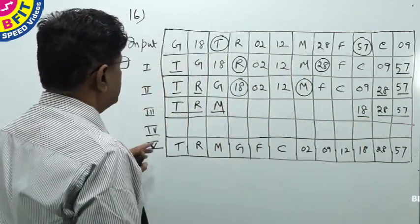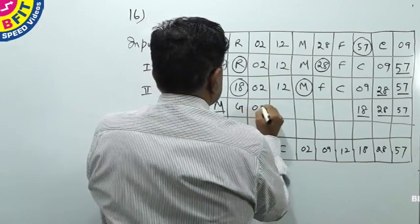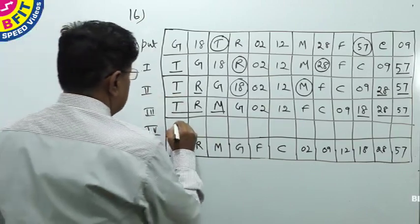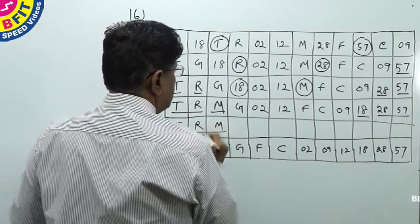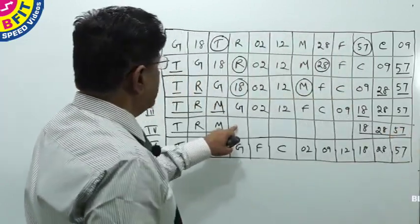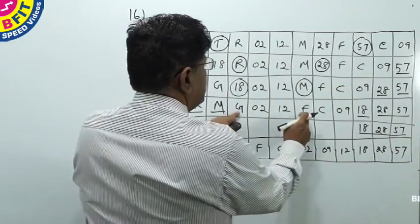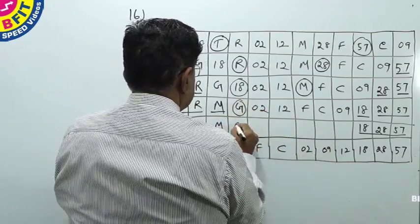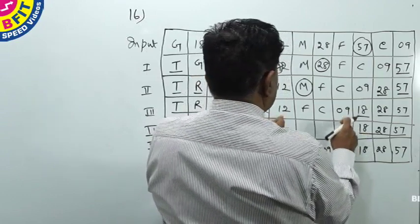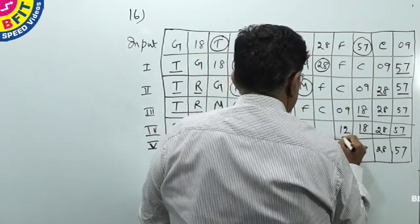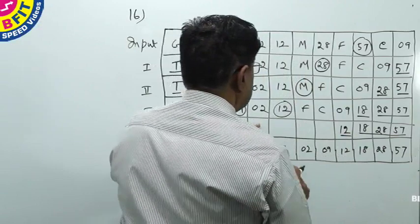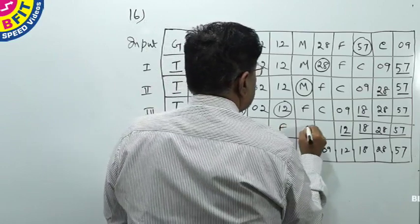In Step 4, we inherit T, R, M on the left and 18, 28, 57 on the right. The next alphabet lower than M is G, and the next number lower than 18 is 12. So G comes next and 12 goes to the right. Step 4 is complete, and the remaining elements are 02, F, C, 09.